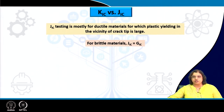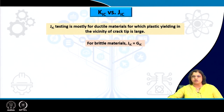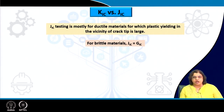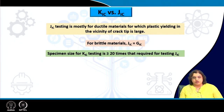When the plastic zone size is very large, K1c or linear elastic fracture mechanics is no longer valid, and we have to consider plastic deformation — elastic-plastic fracture mechanics becomes applicable. However, for brittle materials we do not need J1c at all, since J1c for brittle material is the same as G1c, and we do not need to include the plastic component.